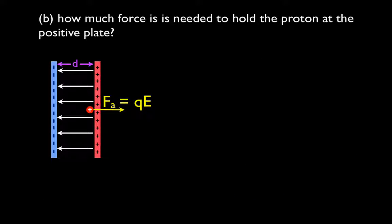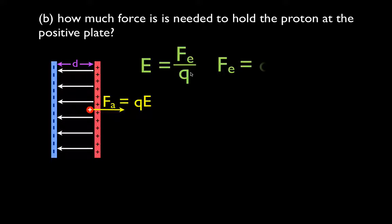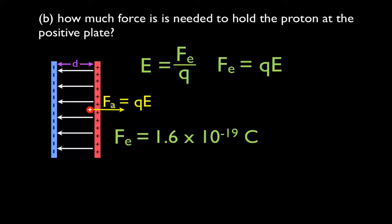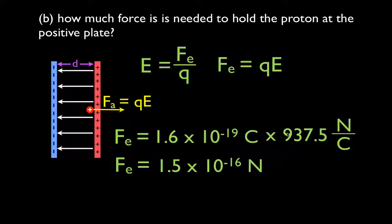The second part is finding the force needed to hold the proton at the plate. The electric field is defined as electric force per coulomb of charge, so we calculate the electric force by multiplying the charge in coulombs by the electric field in newtons per coulomb. The coulombs cancel, leaving newtons. The force on the proton is 1.6×10⁻¹⁹ times 937.5, giving 1.5×10⁻¹⁶ newtons.